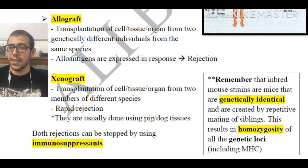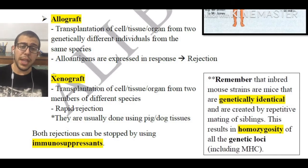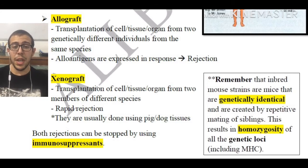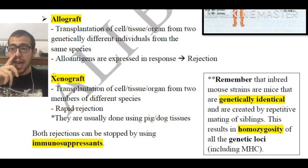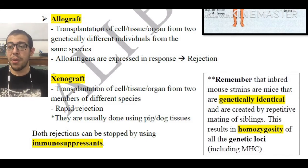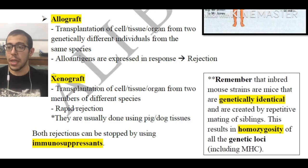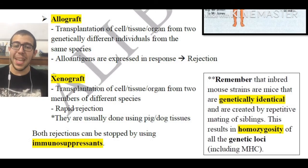This is usually done with pig or dog tissues. We know that pig blood vessels are quite important when we want to test them in humans, so this is one of the ways they used to test. Preventing these immune rejections was a difficult task, however it is possible. Both allografts and xenografts rejections can be stopped by using immunosuppressants.